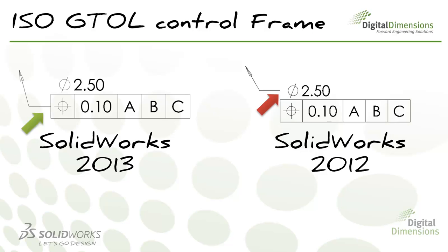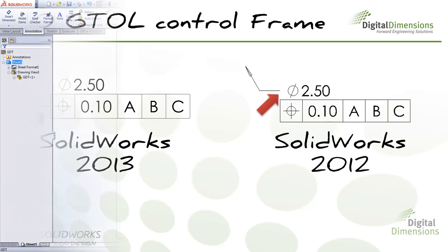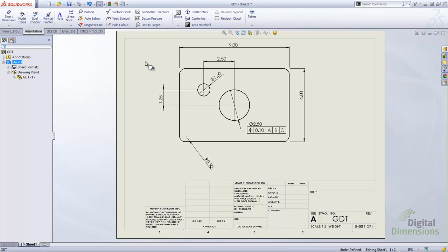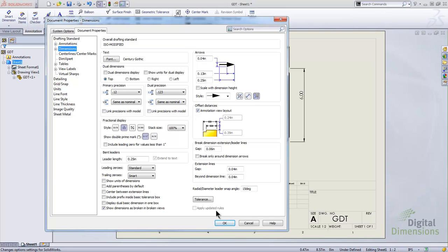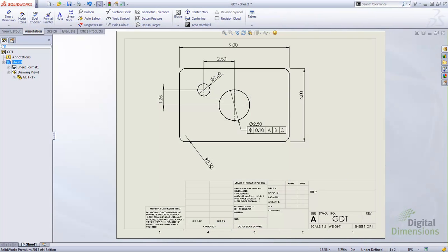For ISO and international standards, SOLIDWORKS 2013 has improved where the attachment point is for any radius or diameter leader dimensions — it now actually attaches to the geometric tolerancing block if one has been added. For existing drawings where the leader wasn't attached to the correct location, go to Options, Document Properties, Dimensions, where there's a checkbox you can turn on to update it to apply the new rule.